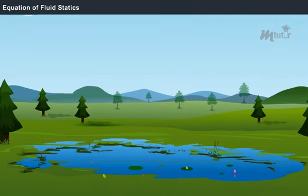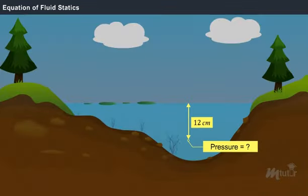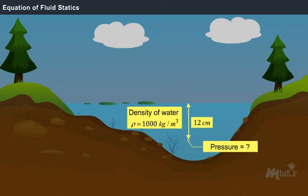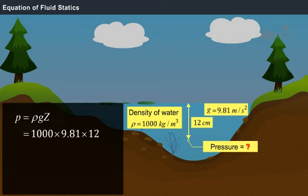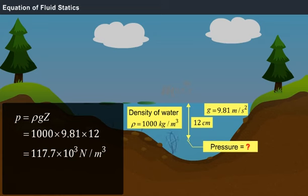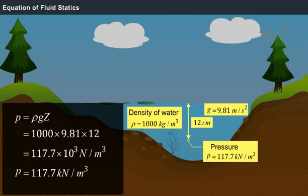Now let us see how this equation helps us in calculating the pressure of any static water body. Let us find the pressure at a depth of 12 cm from the free surface of a reservoir. The depth of water H equals 12 cm, the density of water rho equals 1000 kg per meter cube, and gravity G equals 9.81 meters per second square. Substituting in the formula P equals rho into G into Z, we get P equals 117.7 kN per meter square. Thus, the pressure at the depth of 12 cm in the reservoir is 117.7 kN per meter square.